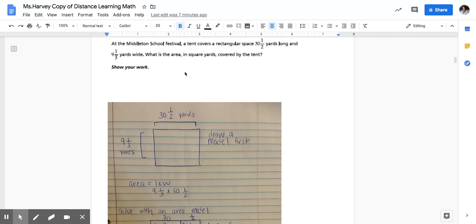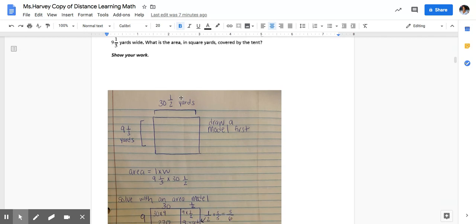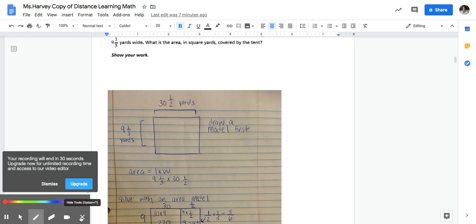So what I did first, I'm given a word problem. I know that if I have a word problem I need to make a model in order to represent what was given to me. So I made a model first and my model shows that the length is 30 and one half yards and that the width is 9 and one third yards.